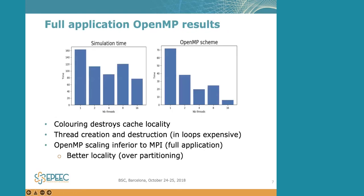Here are some results of the OpenMP parallelization of the full AVBP application. We get good speedup at higher thread counts. However, one major problem is that coloring actually destroys cache locality. We tried to mitigate this through renumbering and reordering of elements and nodes, but it still removes some of the cache benefits you get from a pure MPI code where you over-decompose the problem and run it on each core, giving better data locality. Another problem is thread creation and destruction happening every iteration of a loop, which is quite expensive and prevents further speedup gains.